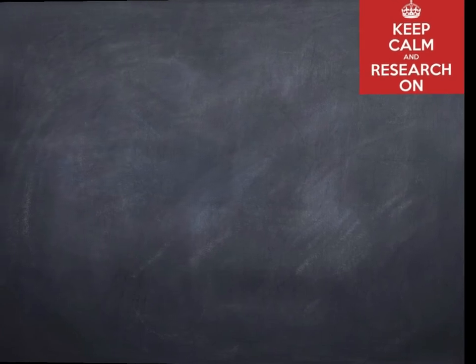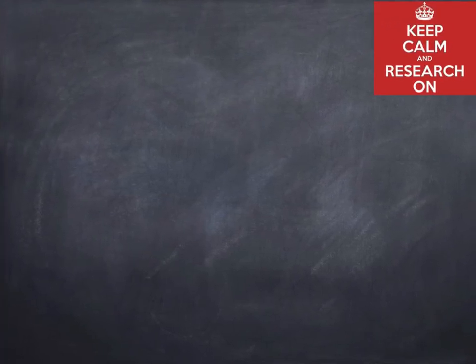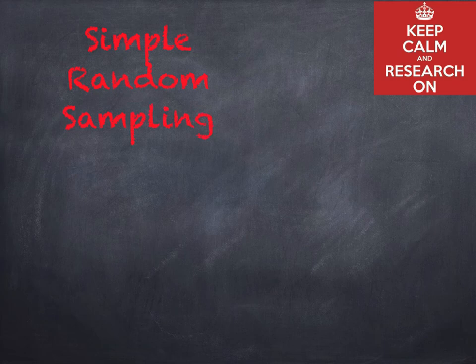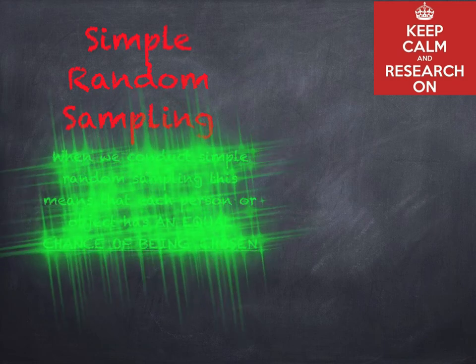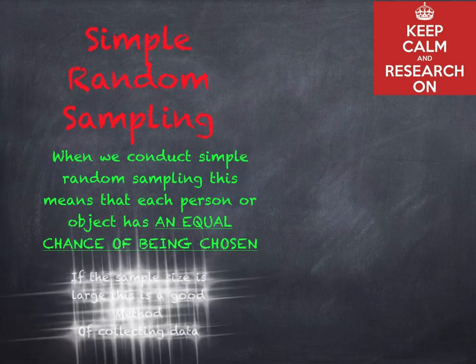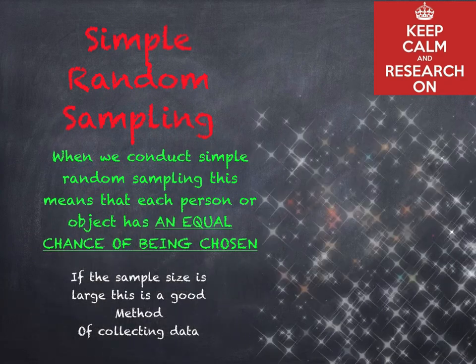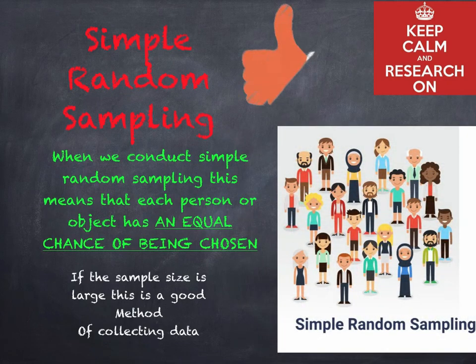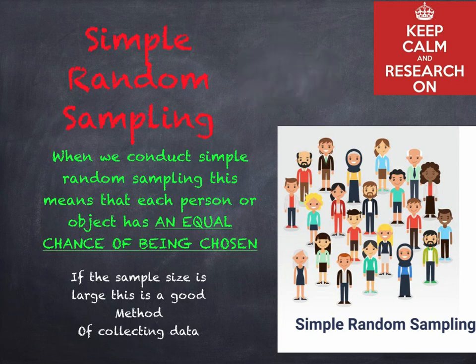The first type is simple random sampling. When we conduct simple random sampling, each person or object has an equal chance of being chosen. If the sample size is large, this is often a good method of collecting data.